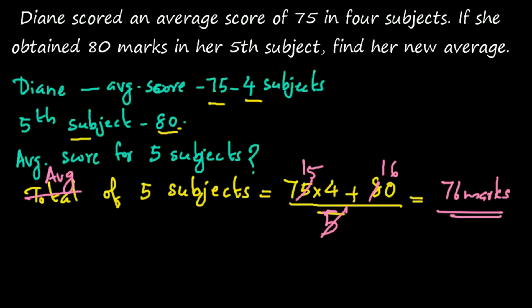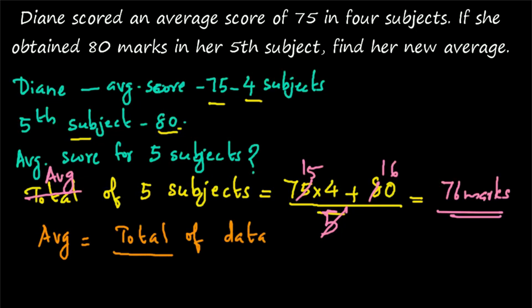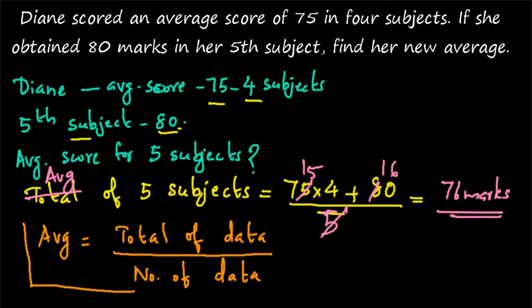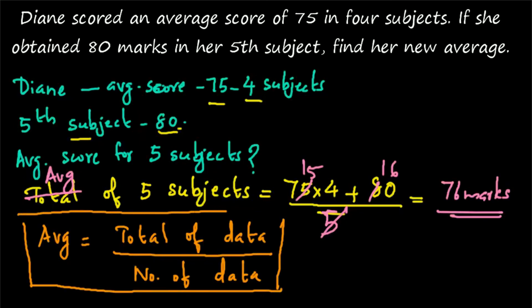So her average increases from 75 to 76. This is the basic formula for average: sum of data divided by the number of data. From this you can find the total of data. Whenever you have the average and the number of data, you can easily find the total, and vice versa. Any two values given means you can easily find the third one. Thank you for watching.